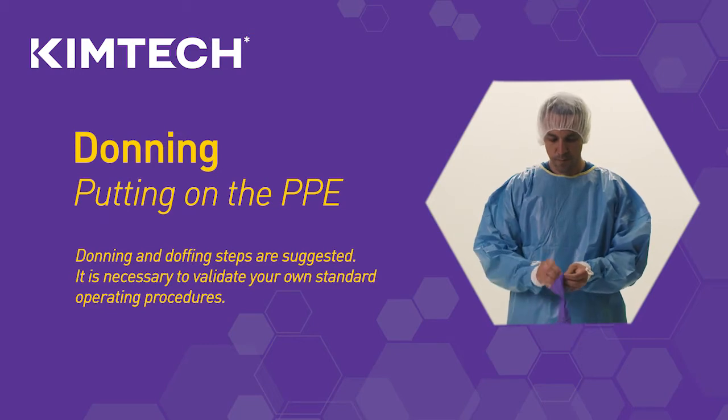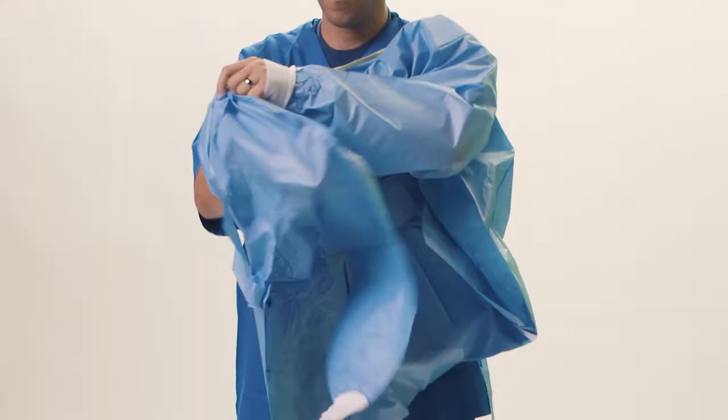Here's how to put on the gown and gloves. Push your arms through each sleeve of the gown. Tie the straps at the neck and at the back of the gown.